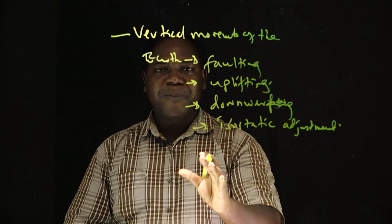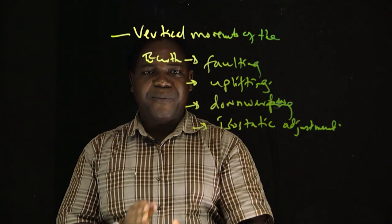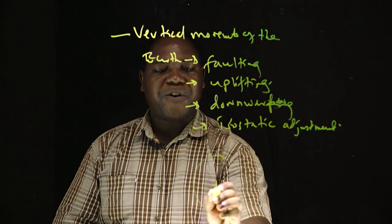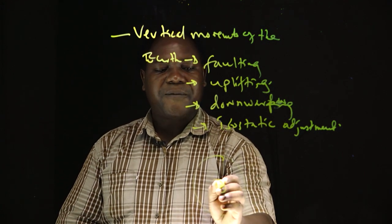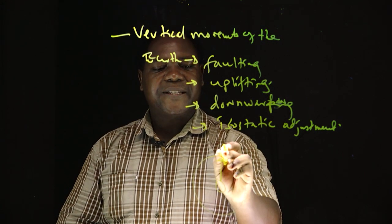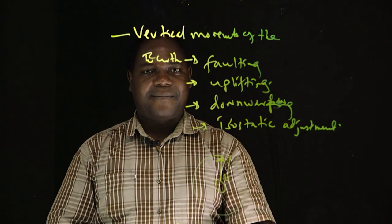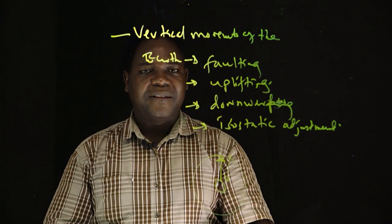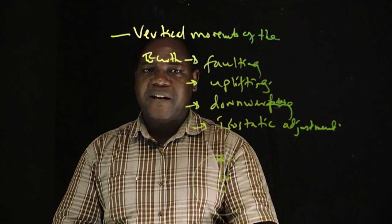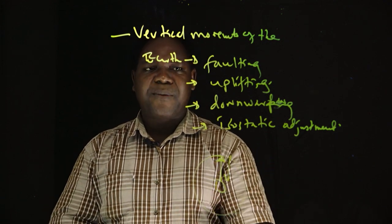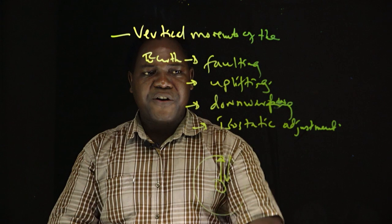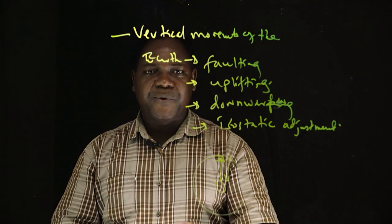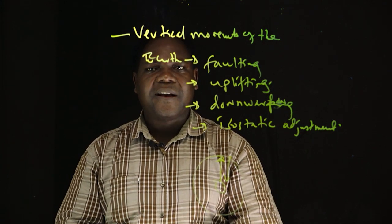The first movement is vertical movement, which is the movement from the core of the earth to the surface and down the surface. It is because of this vertical movement that some parts of the earth's surface are fracturing, some are uplifted, some are downwarped, and this may lead to what we call isostatic adjustment.